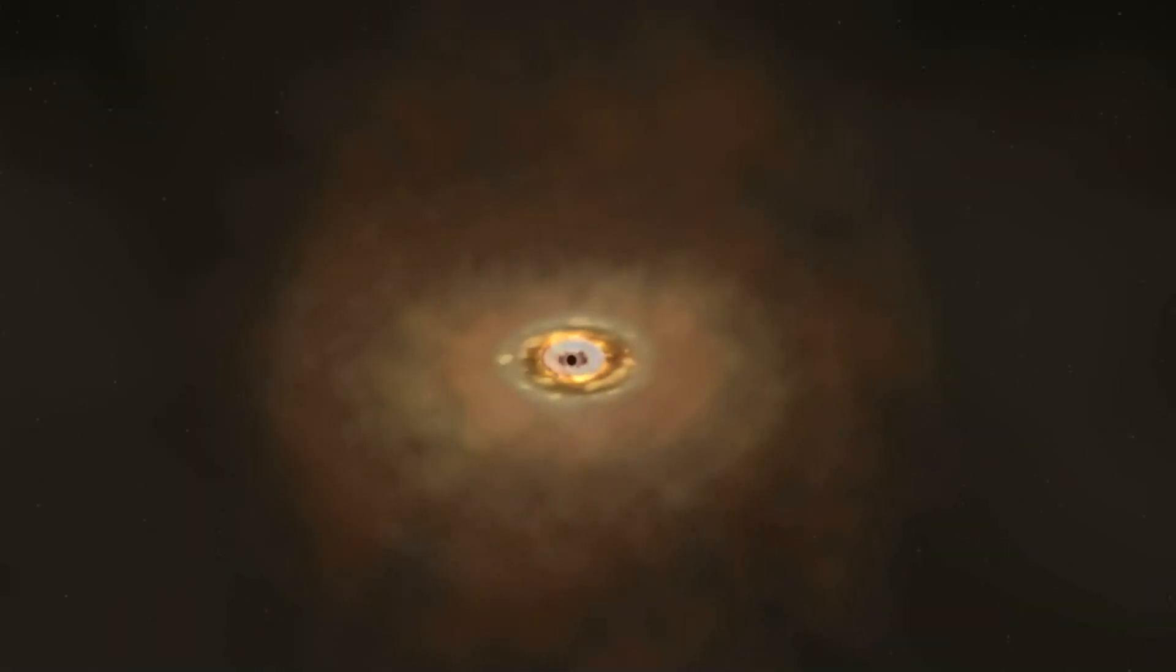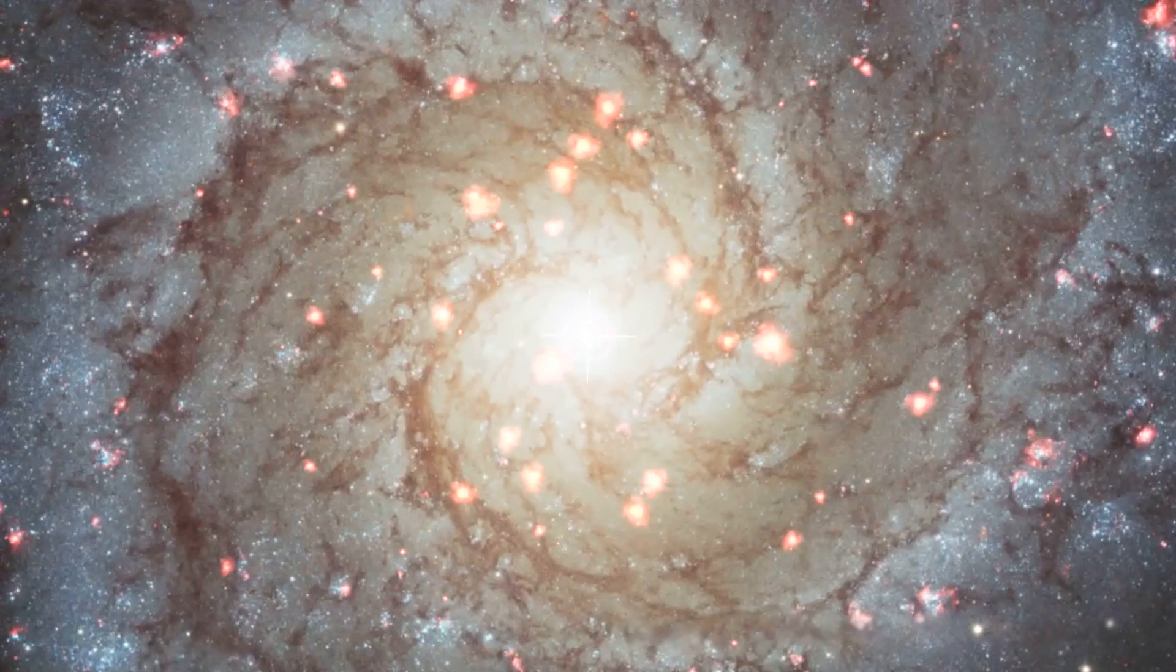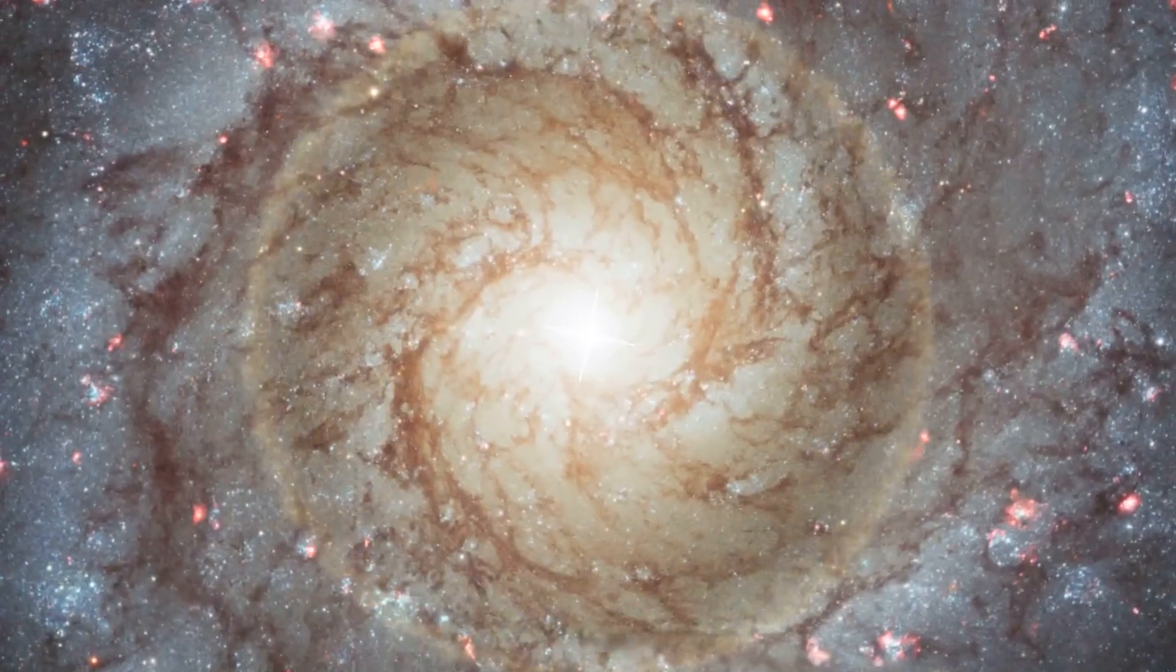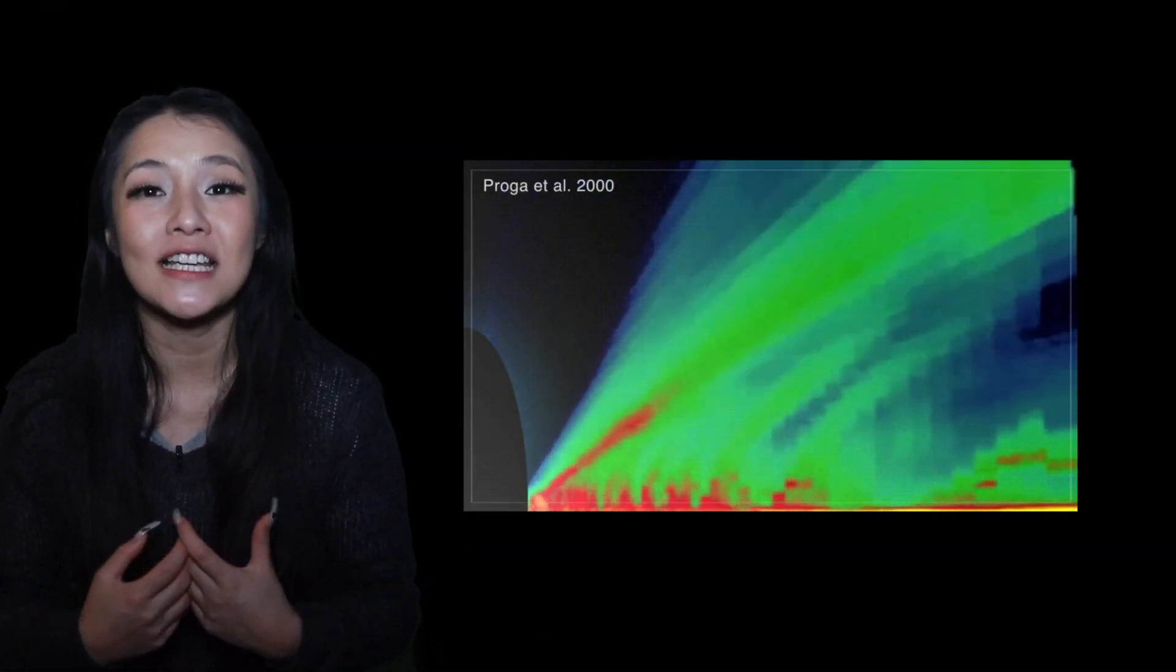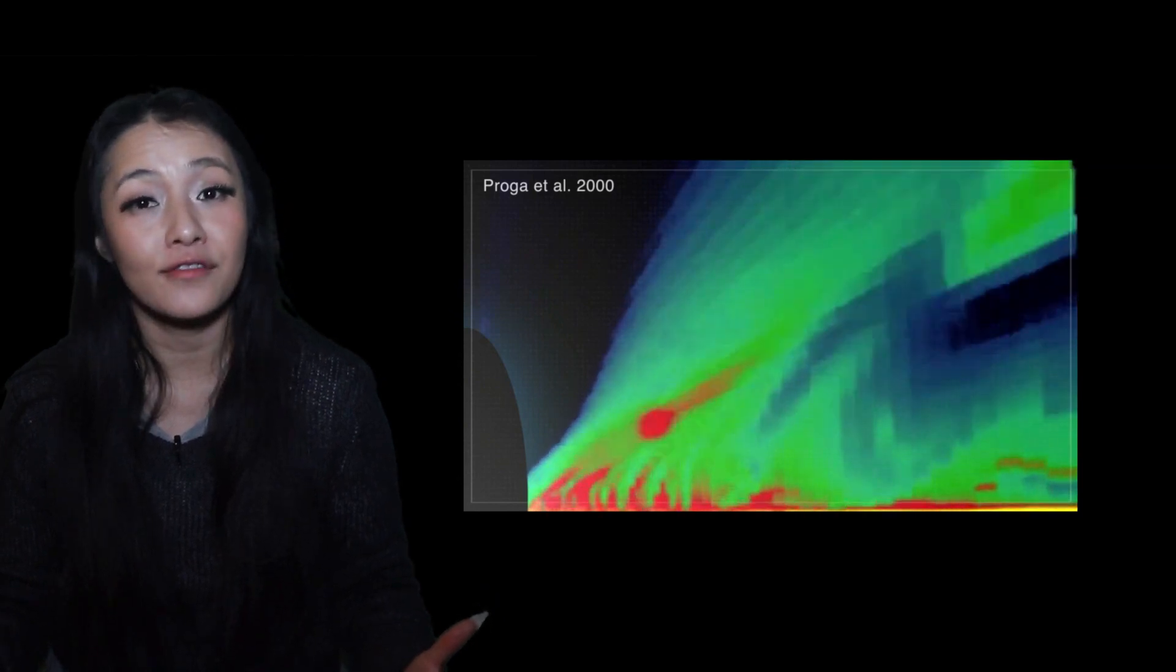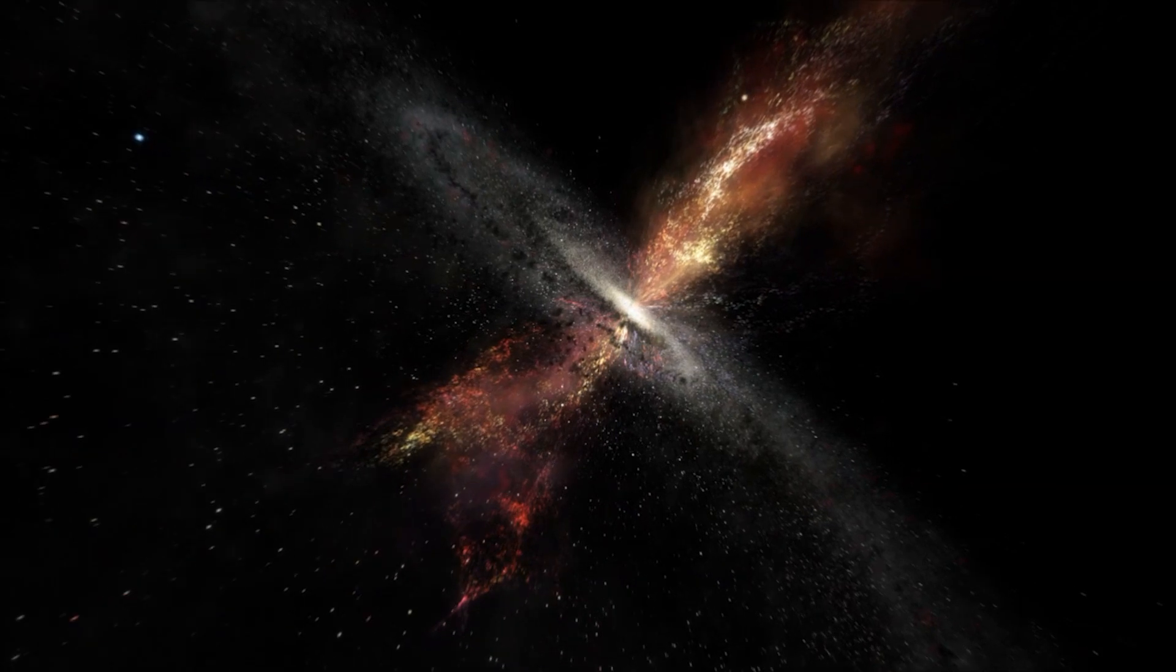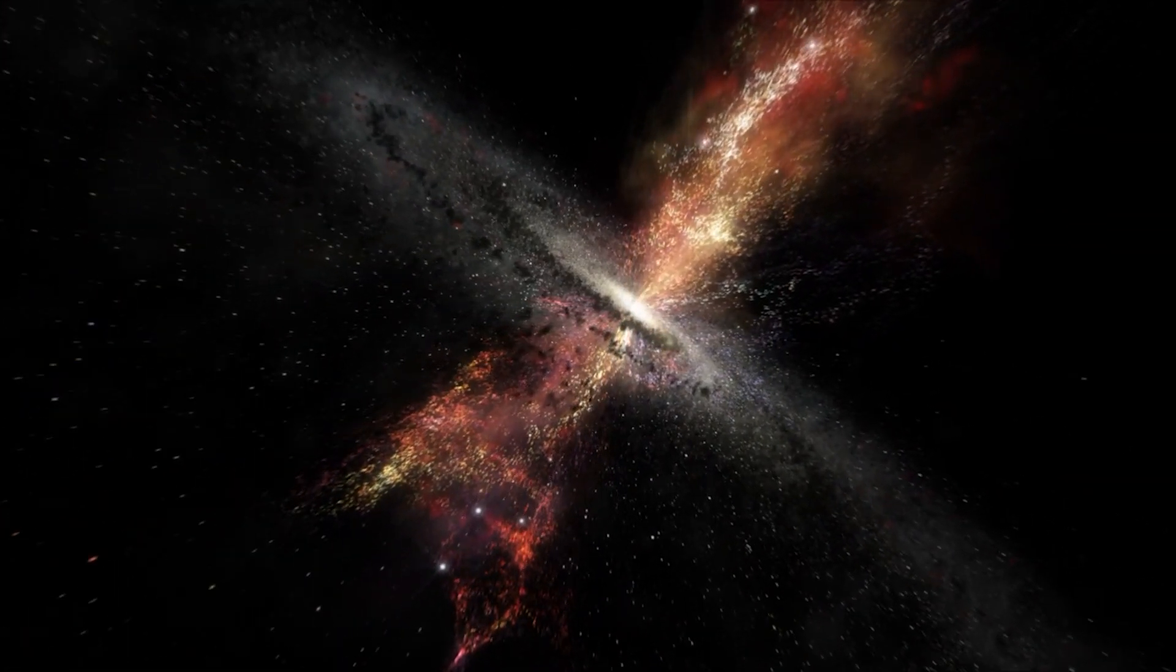As the black hole sucks in the surrounding material, it propels super-fast jets of material travelling out of the poles of the disk at almost the speed of light. These produce bright lobes of radio emission and cavities in x-rays. But additionally, material spiralling onto the black hole can gain super-fast speeds and be ejected onto the surrounding area of the accretion disk. These black hole winds can be so powerful that they can halt star formation and have a huge impact on their host galaxies.